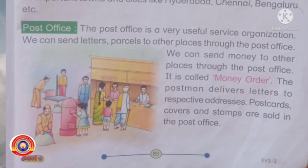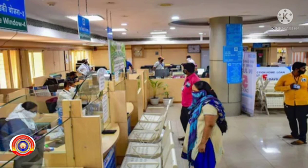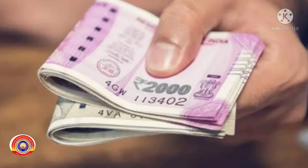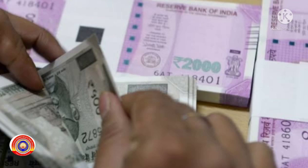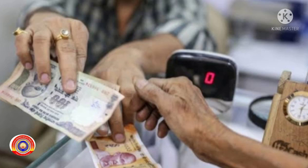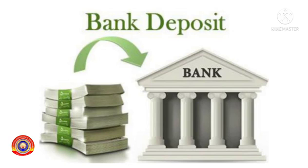Dear children, look at this picture. Can you name this service organization? Yes, it is a bank. We can keep our money and valuable things in the bank. If we keep our money in the bank, we can get interest on our money. Banks collect money from the people in the form of deposits, and banks supply this money to the people in the form of loans.